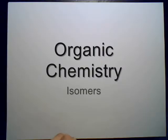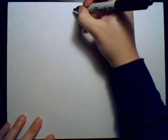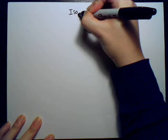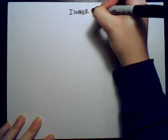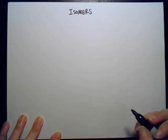Isomers are molecules that have the same molecular formula but differ somehow in either their arrangement structurally or spatially. There are many different ways in which these molecules can differ, so I'm going to go over the different categories and subcategories here to explain the different types of isomers.